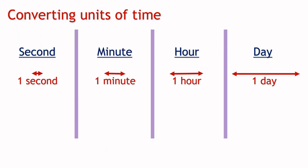Let's revise how these units relate to each other. 60 seconds equals 1 minute, 60 minutes equals 1 hour, and 24 hours equals 1 day.